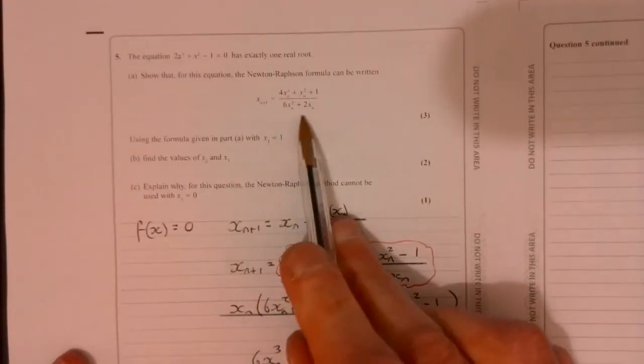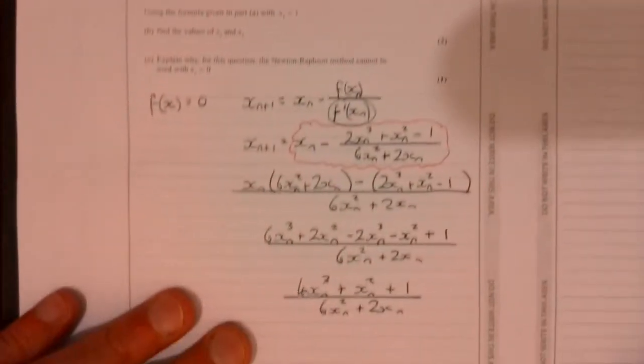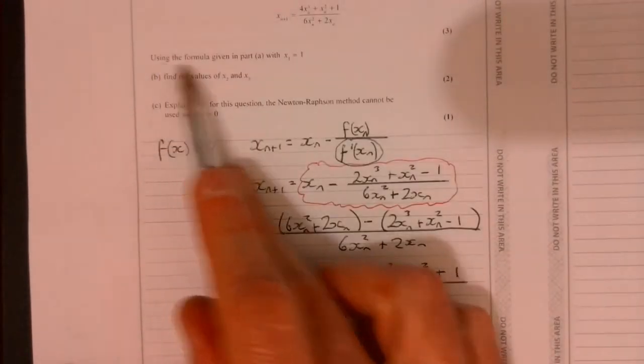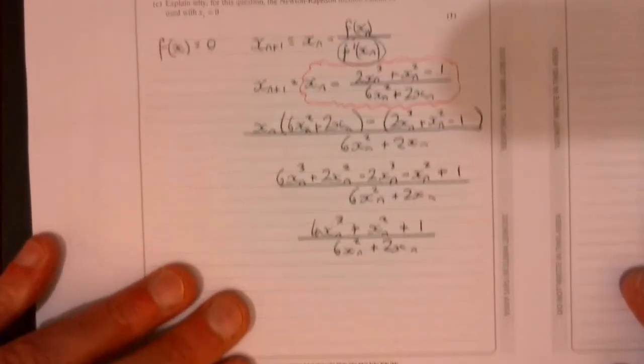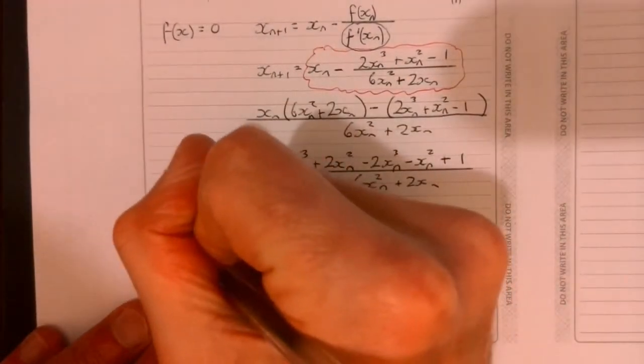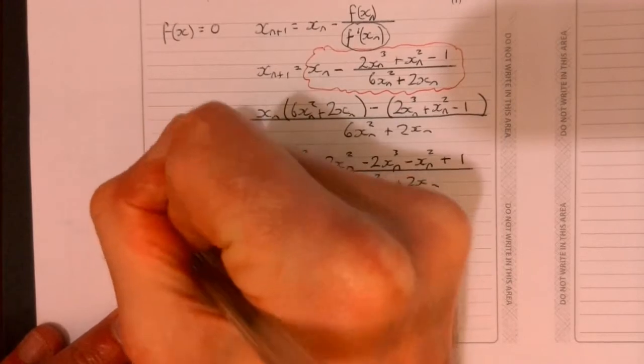That was part a, wasn't it? Trying to get to that. So now part B. Part B says use x₁ to be 1. Find x₂. Find x₃. So here we go. Let's just quickly do it. So we can have a look. Part B.